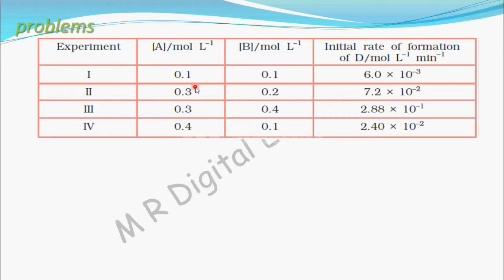To find x or y, look for experiments where the concentration of one reactant is kept the same. In experiments 2 and 3, the concentration of reactant A is 0.3 and 0.3 — both the same — but the concentration of B is varied from 0.2 to 0.4.